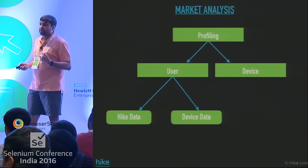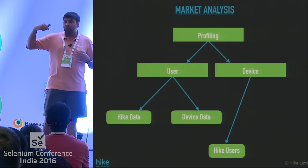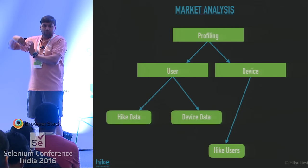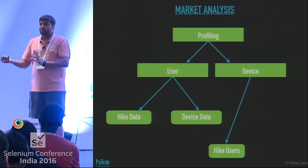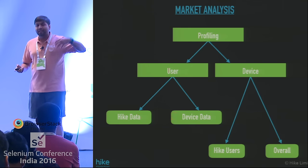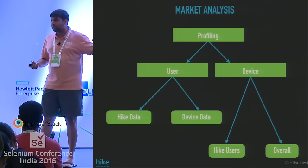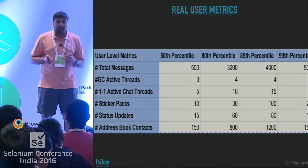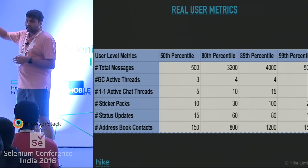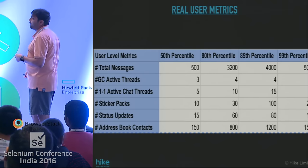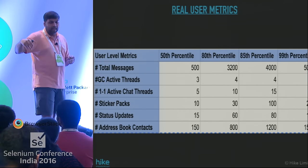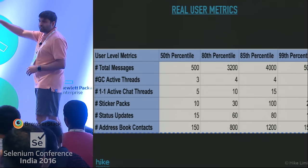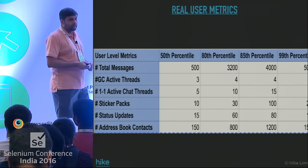We look at devices — what are the top devices used by Hike users. But that's not sufficient, because we might be missing a big market segment, possibly because our performance is really bad on those devices and people aren't using the app. So we also look at what are the top devices in the market overall. We mishmash all of this and create a metric — we segmented our users into buckets: 50th, 80th, 85th, and 99th percentile — looking at number of messages, group chats, one-on-one chats, sticker packs, status updates, address books, and so on.